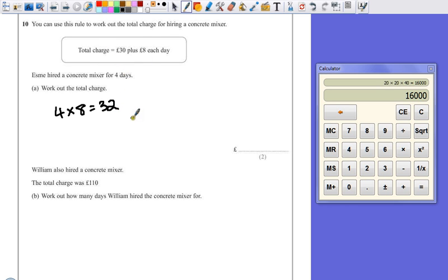Don't forget that the standing charge, though, is £30. So we've got 30 add 32, which is £62. So that must be the total charge. So our answer there is £62.